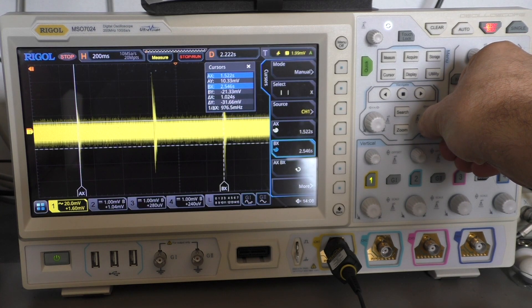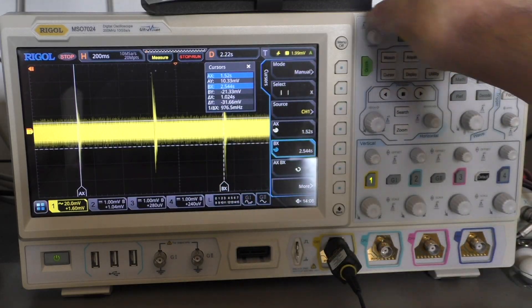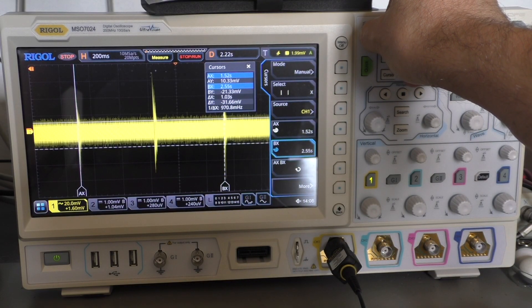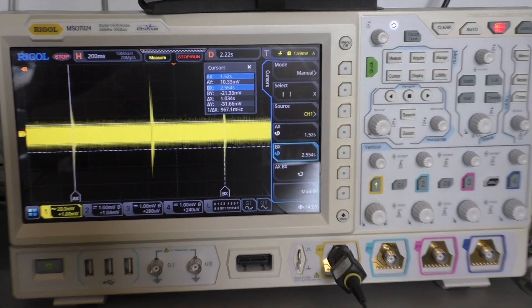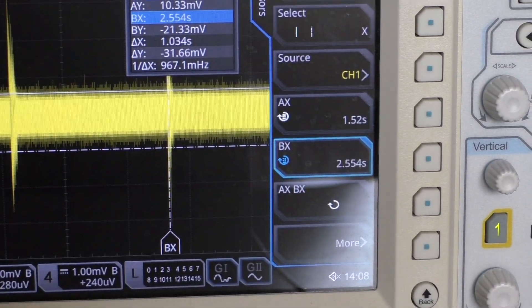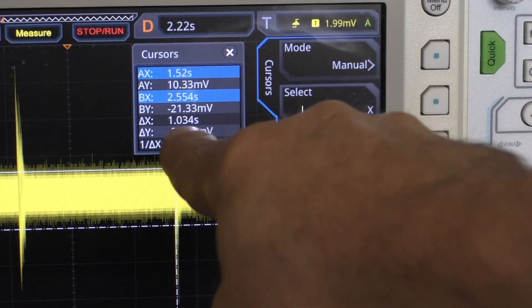And because the ticks and the tacks are not always the same length, I'm measuring from tick to tick or from tack to tack. And that should be exactly one second. Here you can see we have 1.03 seconds, so the clock is a little bit slow.